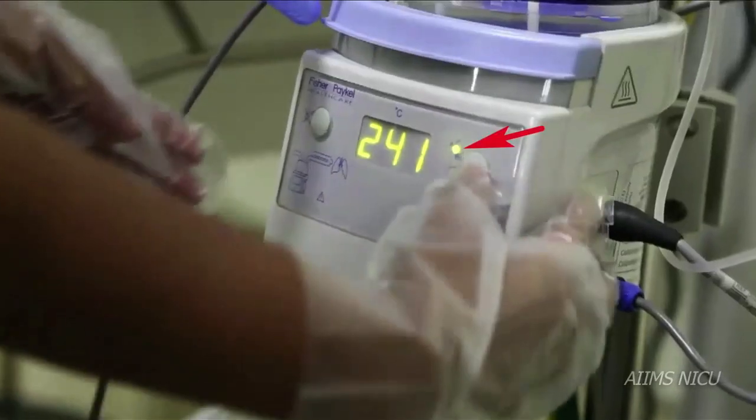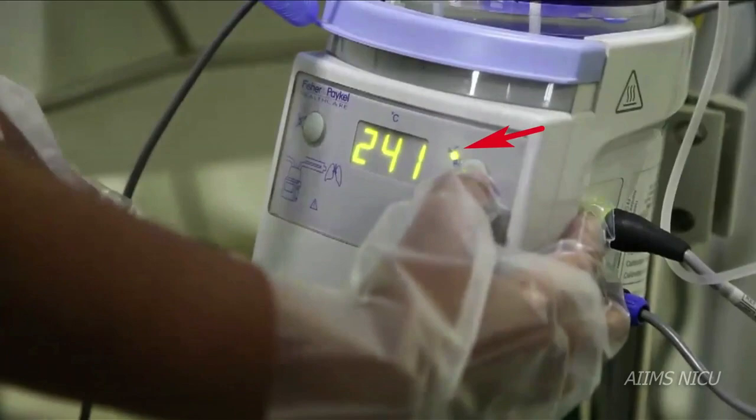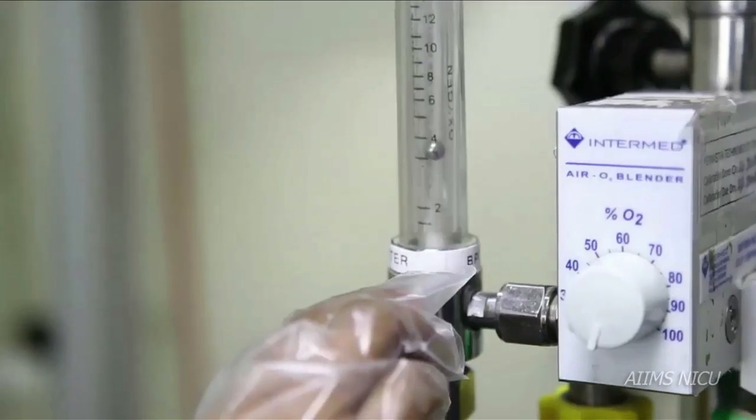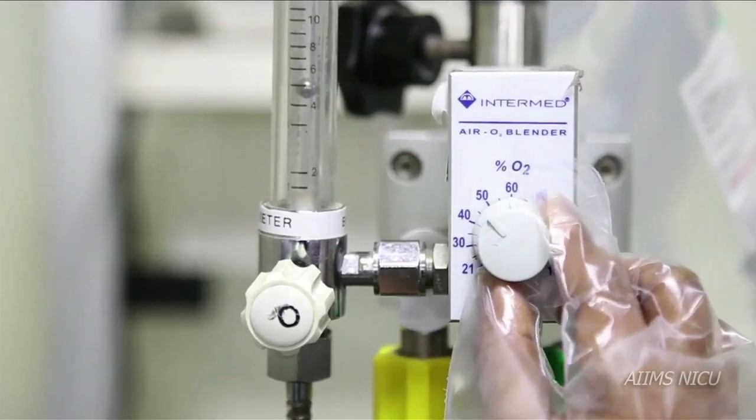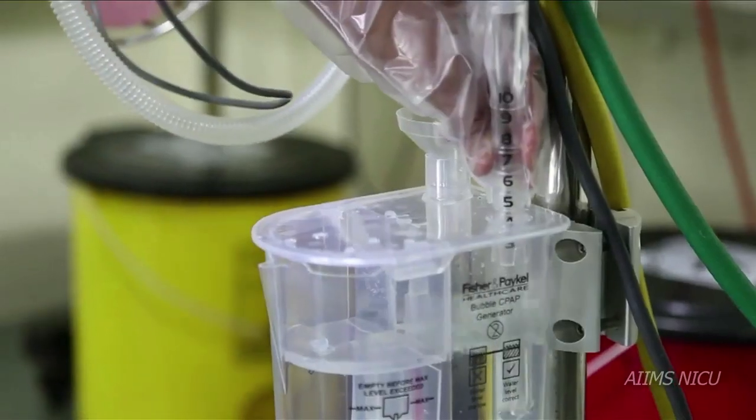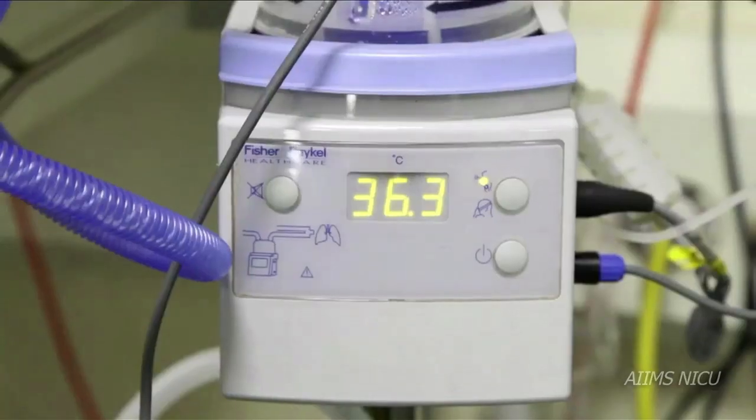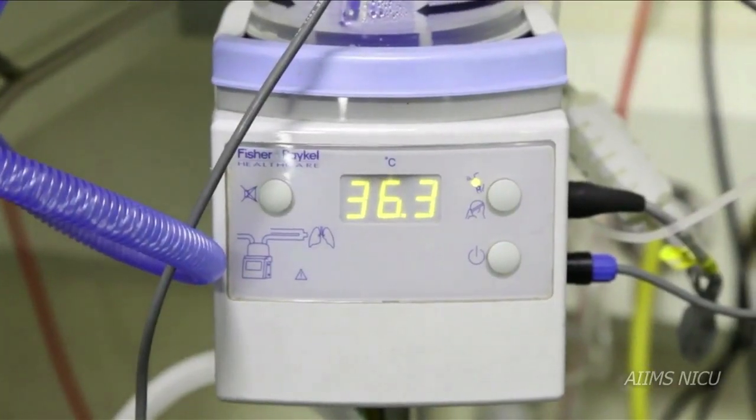Switch on the humidifier and set in invasive mode as shown here. Watch for bubbling in the bubble chamber. Set the FiO2, flow, and pressure to appropriate level. Wait for the humidifier to display a temperature of 37 before connecting the circuit to the patient.